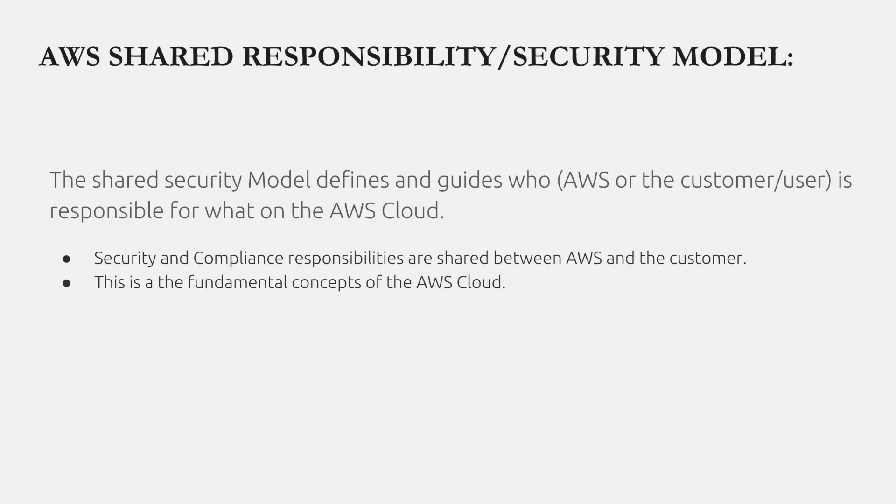Let's talk about the AWS shared responsibility and security model. The shared responsibility and security model defines and guides who is responsible for what on the AWS cloud — who is either AWS or the customer. Security and compliance responsibilities are shared between AWS and the customer. It's not like one of them has to do all of the work.